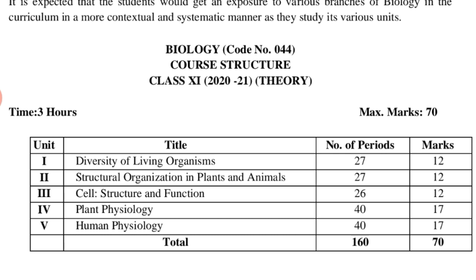Theory contains 5 units — that means the whole biology book is divided into 5 units. The 1st unit, Diversity of Living Organisms, has 4 chapters. The 2nd unit has 3 chapters, the 3rd unit has 3 chapters, the 4th unit has 5 chapters, and the 5th unit has 7 chapters.